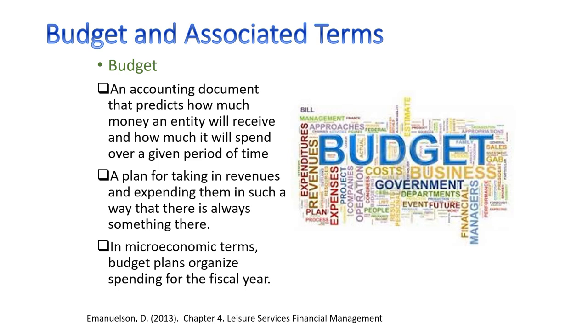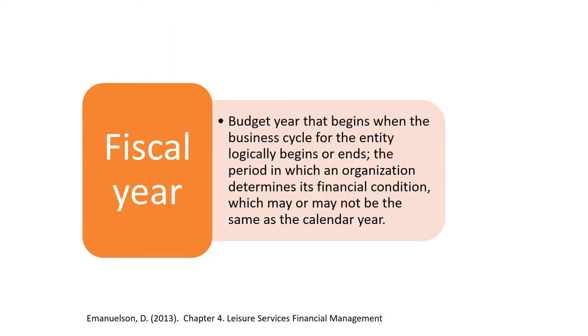Budgets really are the beginning of all these financial statements — it all starts with making a budget, and budgets are usually based on income statements and balance sheets. A budget is an accounting document that predicts how much money an organization is going to receive and how much it's going to spend. It's a plan for getting revenues and organizing spending for the fiscal year. A fiscal year is the budget year that begins when the business cycle logically begins or ends — the period in which an organization determines its financial condition, which may or may not be the same as the calendar year.